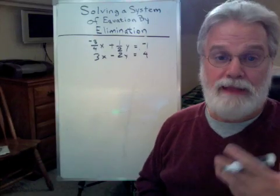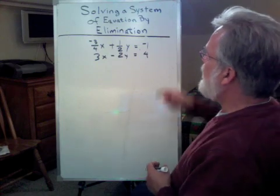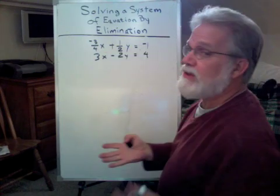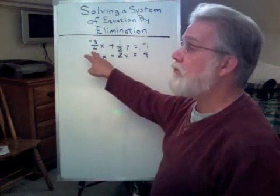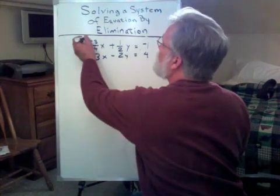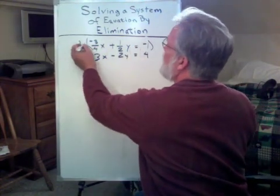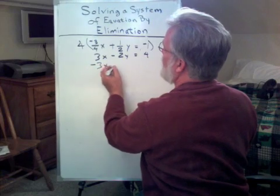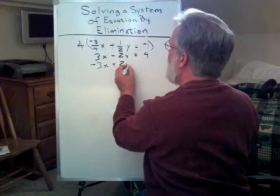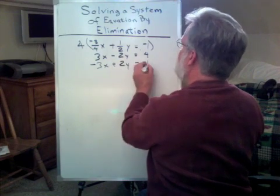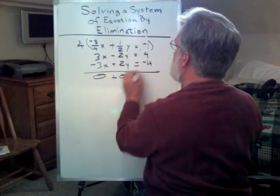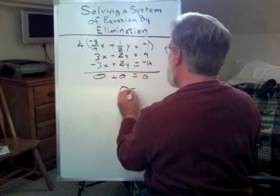Here's an example of that principle. I look at the top equation. I've got these fractions up here. Well, I can get rid of these fractions by multiplying through. Let's see. By 4, I can make this a minus 3x. And if I add it to 3x, that's zero. So, I'm going to multiply through by 4. And what I'm going to get here is minus 3x. 4 over 2 is plus 2y. And that's negative 4. Add them all up. I get zero here, zero here, and zero here. So, zero equals zero.